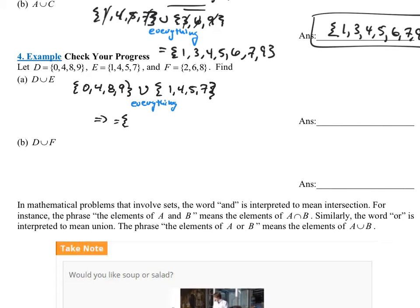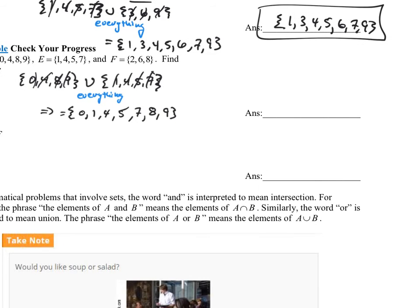So that would be the set. Well, I see a 0, a 1, a 4, a 5, 7, an 8, and a 9. Looks like that's all the elements. So my answer should be exactly what I got, which was 0, 1, 4, 5. Apologize. Let me go back. Something just messed up. 0, 1, 4, 5, 7, 8, and 9.